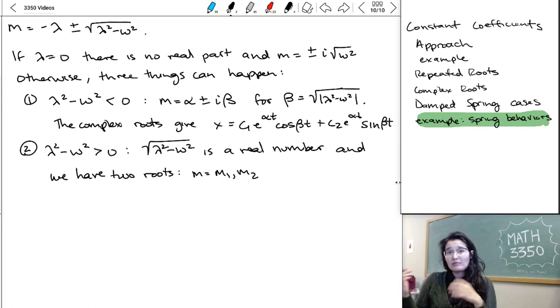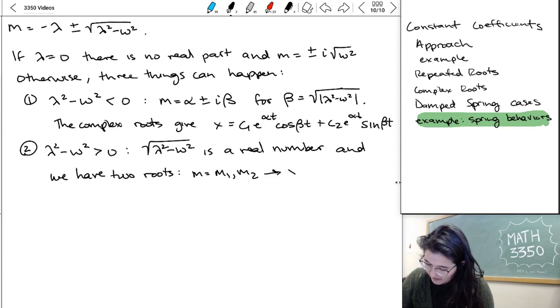And instead of writing out that quadratic formula again, I'm just going to say there, m1, like when you add it, m2 when you take it away. So x is going to be like c1 e to m1t plus c2 e to m2t.